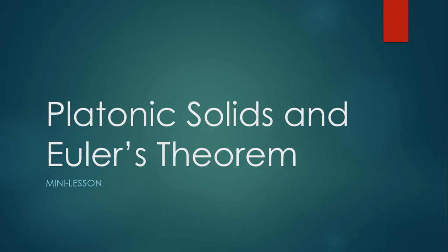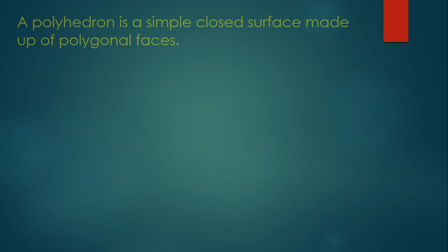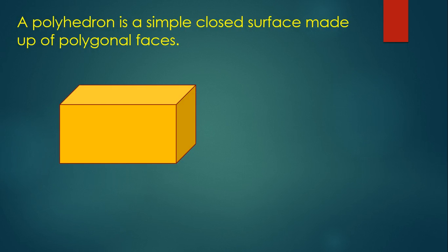Before we talk about the Platonic Solids and Euler's Theorem, let's do a quick review. We said that a polyhedron is a simple closed surface made up of polygonal faces, and we were able to attach a name to each of the polyhedrons we looked at. For example, this one we said would be a rectangular prism.